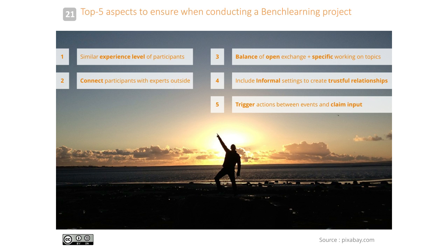Third, maintain a balance of open exchange and specific working on topics — we balance open discussion rounds in the morning with more focused topic work in the afternoon. Fourth, include informal settings to create trustful relationships, which we did through pre-evening events. Fifth, trigger action between events and require input — collaboration at this scale doesn't happen naturally; there needs to be a project manager who actively triggers contributions, because once participants return to their own companies they have their regular work and someone must maintain the momentum.